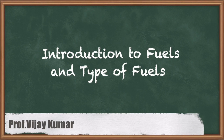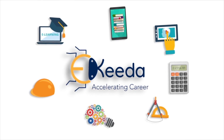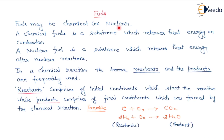What is fuel? Fuel may be chemical or nuclear. A chemical fuel is a substance which releases heat energy on combustion. That means when a fuel combusts, it releases heat. In a thermal power plant, that heat is absorbed by water. If combustion takes place in a gas turbine, the mixture will be the working fluid for the turbine. A nuclear fuel is a substance which releases heat energy after a nuclear reaction.